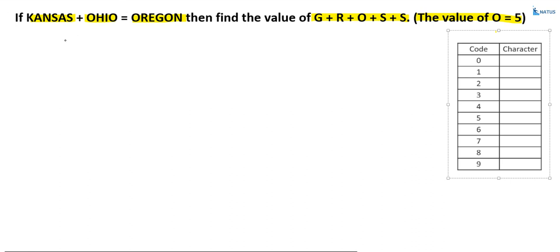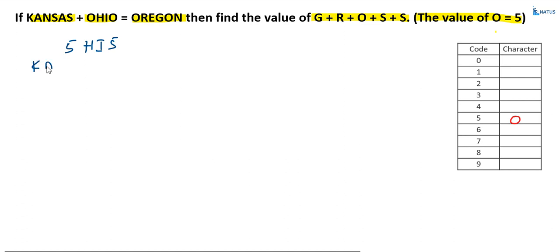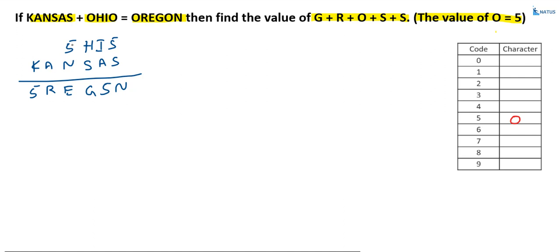First, write down the four-letter word. O is equal to 5, so OHIO becomes 5-H-I-5. Next, KANSAS. And the sum: O equals 5, so ORIGIN becomes 5-R-E-G-5-N. Here, a four-digit number plus a six-digit number equals a six-digit number.